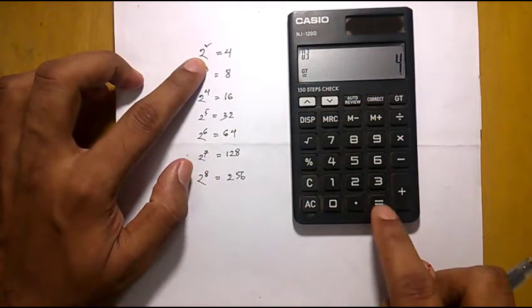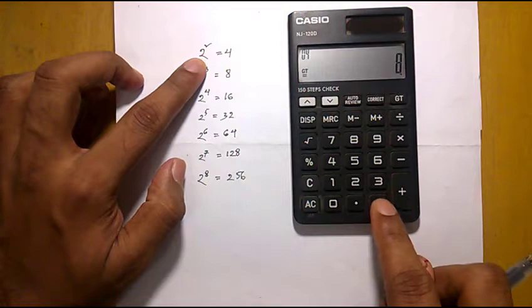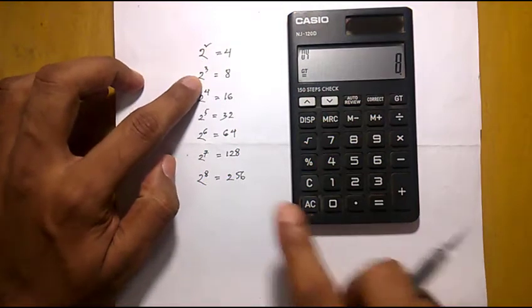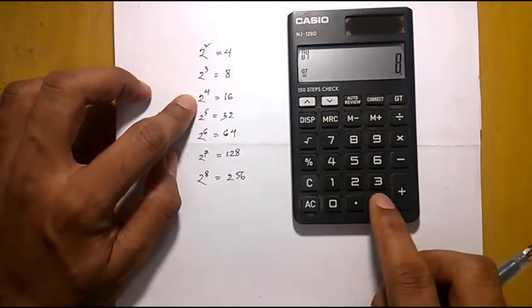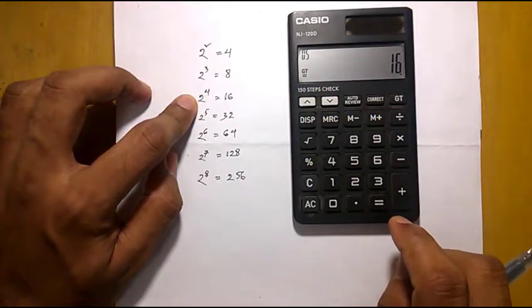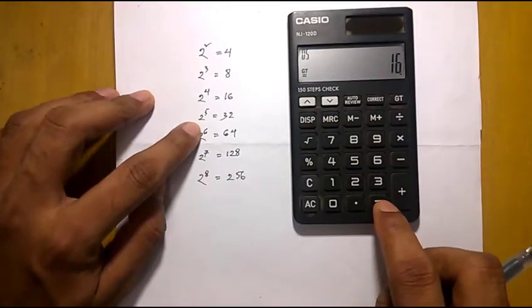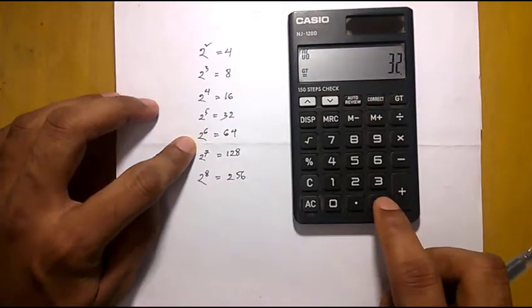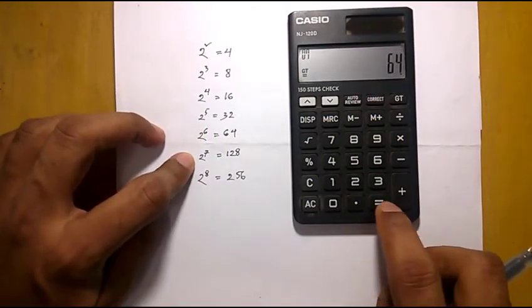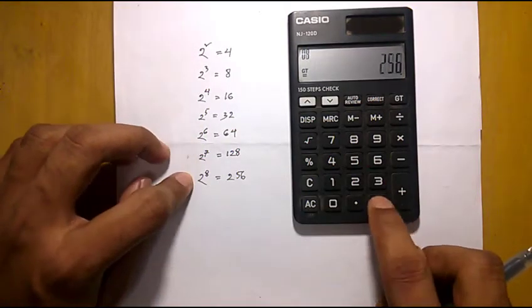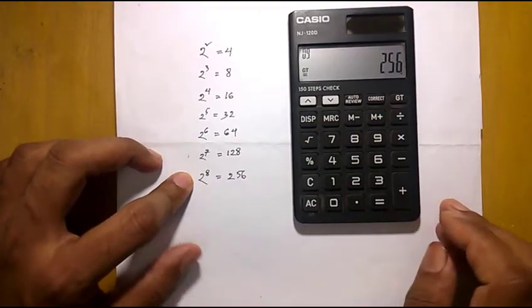Again it will give the result of 2 cubed. 2 cubed equals 8. Again 2 to the power 4, again 2 to the power 5, again 2 to the power 6, again 2 to the power 7, again 2 to the power 8. So this is how we can calculate power of any number.